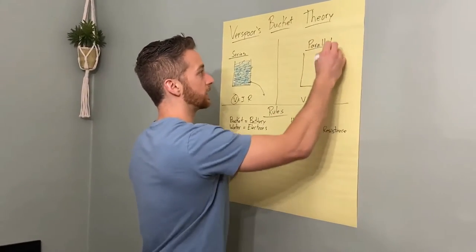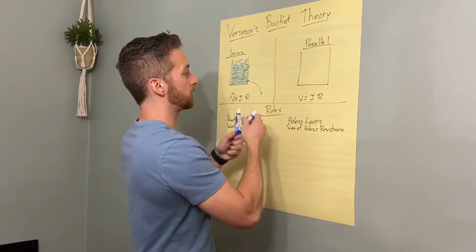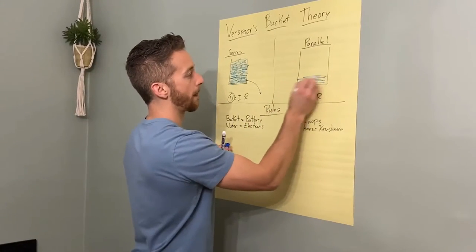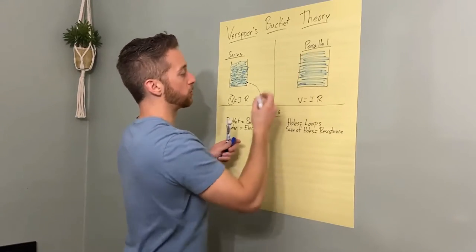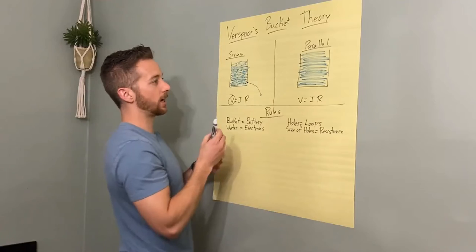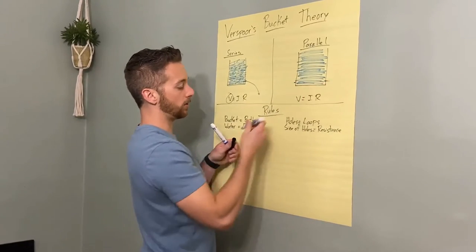In a parallel circuit, similar start, we will still fill our bucket up with water. But the tricky part here is as we punch holes in the side, now we have one, two holes in it.